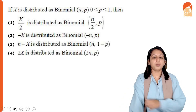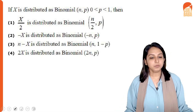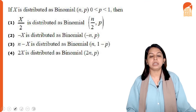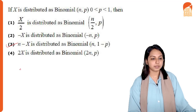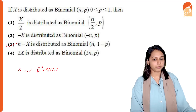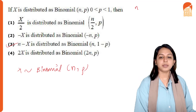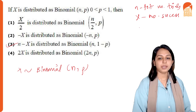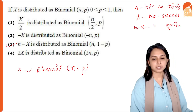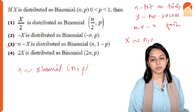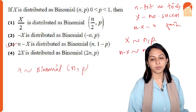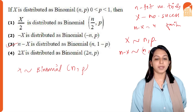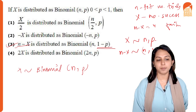If X is distributed as Binomial(n, p) with 0 < p < 1, four statements are given and we need to identify the correct one. By inspection, option 3 is correct: if X ~ Binomial(n, p), where X counts successes, then n − X counts failures and therefore n − X ~ Binomial(n, 1−p), where 1−p is the probability of failure.